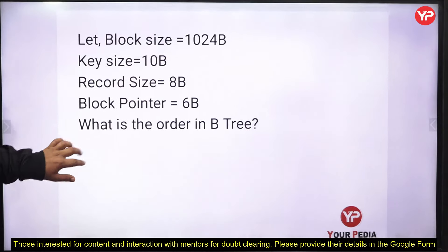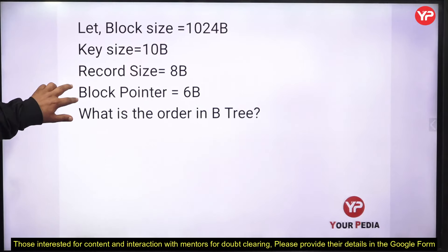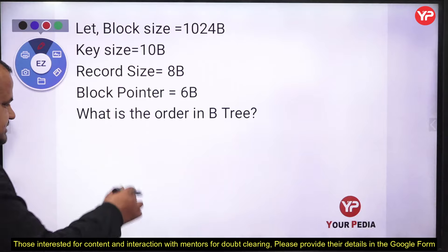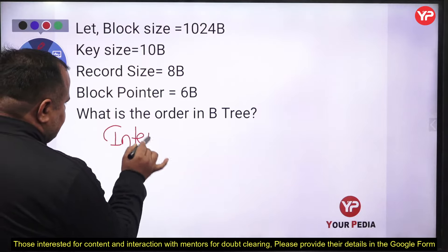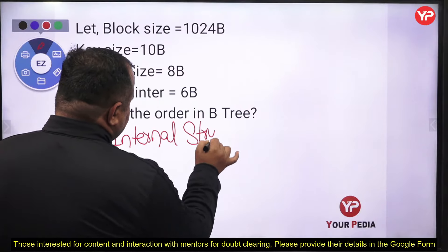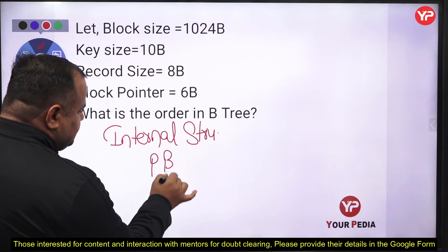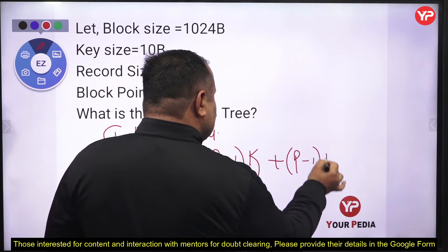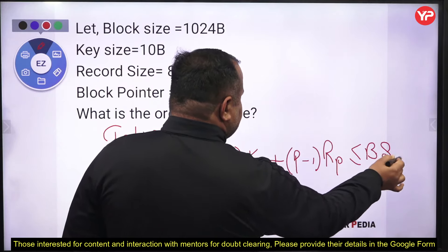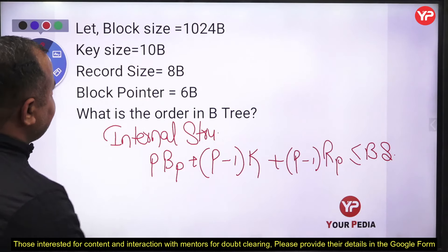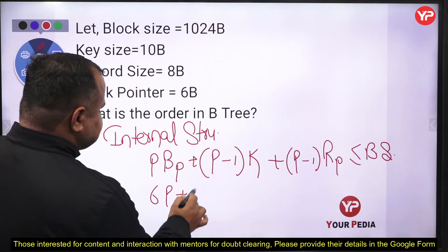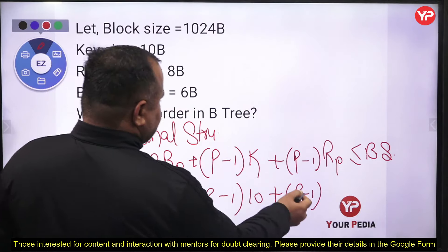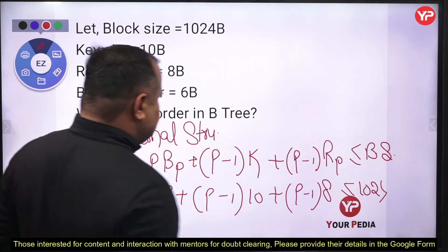Next, let block size be 1024 bytes, key size be 10 bytes, record size be 8 bytes, and block pointer be 6 bytes. What is the order of a B-tree? For the internal structure of a B-tree: P block pointers plus (P-1) keys plus each key has its record pointer, all of which must be less than or equal to block size. So: 6P + (P-1)×10 + (P-1)×8 ≤ 1024. Solve for P to get the order of the B-tree.